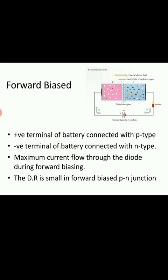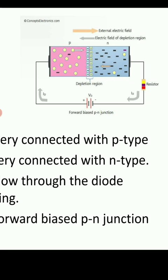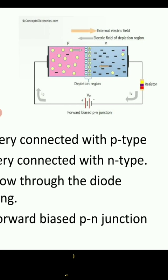In forward biasing, we are supposed to connect the positive terminal of a battery to the P-type semiconductor and the negative terminal of a battery to the N-type semiconductor. If you see in the diagram, we are using one external resistor because we are supposed to resist excess current. We use only the current that is sufficient for the working principle of a diode, and the excess current we are supposed to resist. For that, we are using an external resistor.